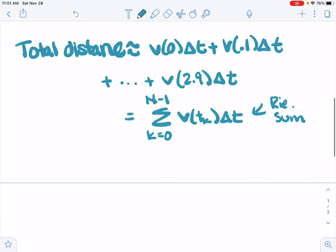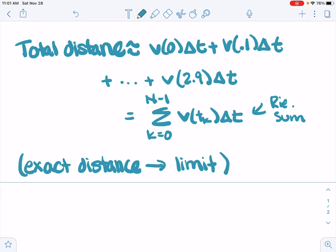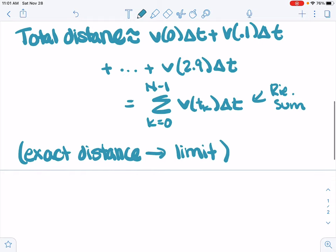And we know if we want the exact distance, we can use shorter time intervals. We can use 0.01 seconds instead of 0.1 seconds, shorter and shorter time intervals. And we can get the exact distance traveled if we take a limit. And that exact distance, from what we've seen, the limit of the Riemann sum is an integral.